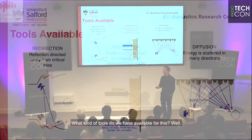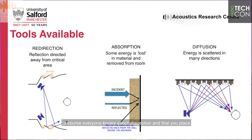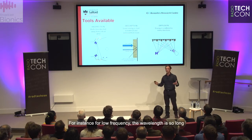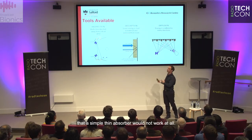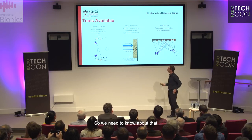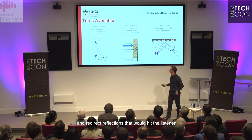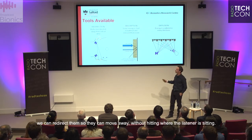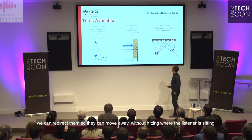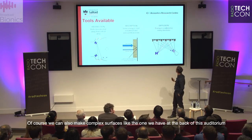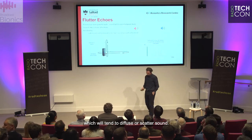What tools do we have available? Everyone knows about absorption — placing soft materials on walls. It's important to understand the relationship between the depth and composition of the material and the wavelengths you're trying to absorb. For low frequencies, the wavelength is so long that a simple thin absorber will not work at all. We can also splay the walls to redirect reflections away from the listener. And we can create complex surfaces like those at the back of this auditorium, which diffuse or scatter sound.